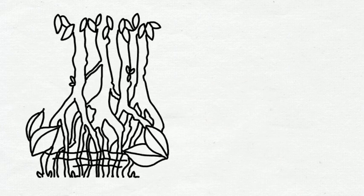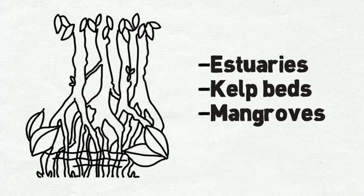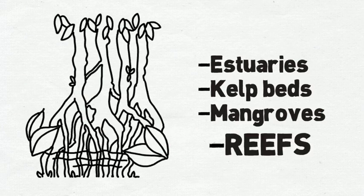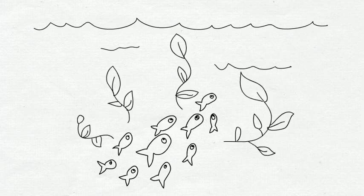In coastal ecosystems, such as estuaries, kelp beds, mangroves and reefs, fish and plants coexist with water, minerals and sunlight.